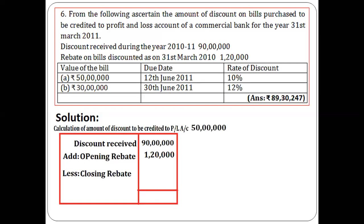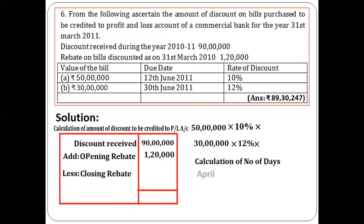For the closing rebate calculation: the first bill of 50 lakhs matures on 12th June 2011. After 31st March, we count April (30 days), May (31 days), and June 12th (12 days), giving a total of 73 days falling after the financial year.